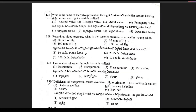Question 128: what is the name of the wall — the septum — present between the right auricular and right ventricular chambers? The answer is option A. Option 1 is the right answer.